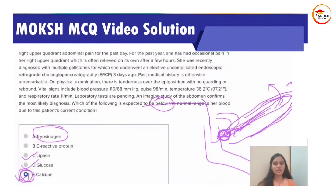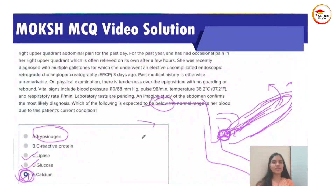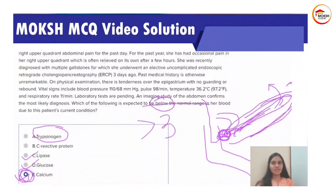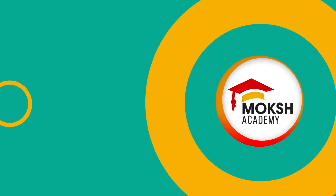Acute pancreatitis can be diagnosed when two out of three criteria are satisfied. First is classic epigastric abdominal pain radiating to the back. Second is increasing levels of lipase and amylase — values should be more than three times the upper limit of normal. Third is imaging criteria using CT scan, which shows characteristic edema of the pancreas and peripancreatic fluid. In most cases, the patient presents with classic pain and labs showing three times elevation of lipase and amylase — these two criteria are sufficient for diagnosis. CT scan is reserved for complicated cases. The correct answer is E) calcium.